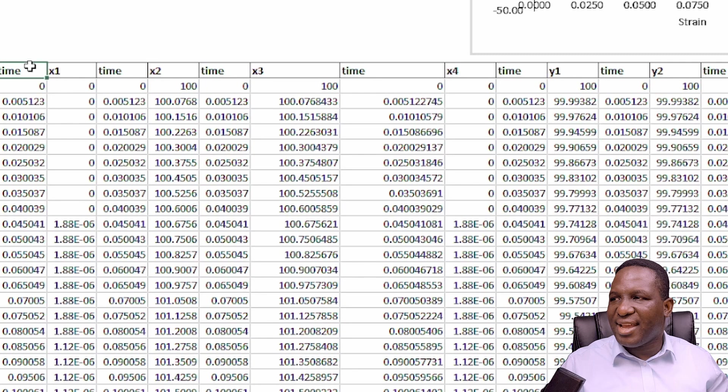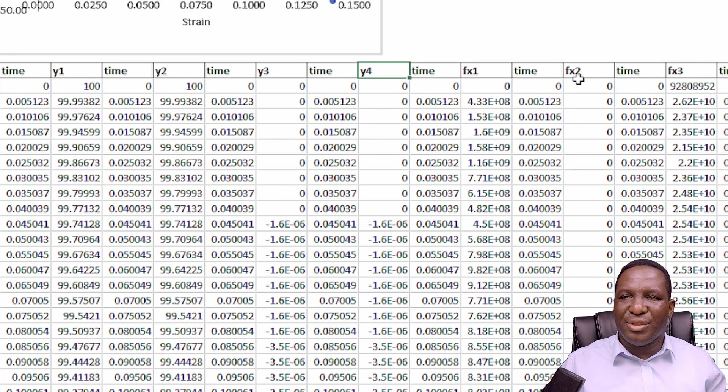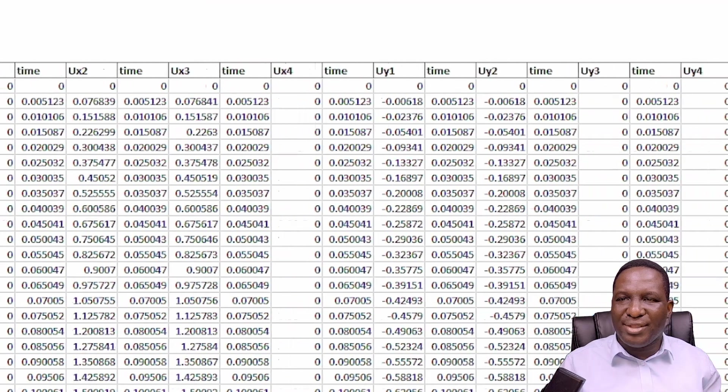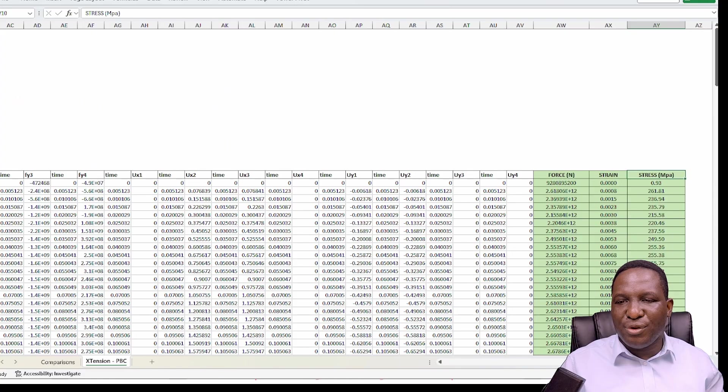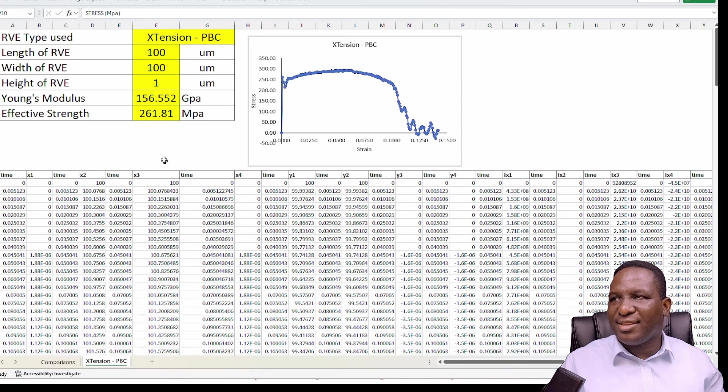This is the data that comes from that simulation. You'll see time, x1 time coordinate position, coordinate position for node 4, reaction force, the coordinate y position for all of them. Then you get the fx coordinate, the reaction force in x for all four nodes. When you get to the end, we can work out the force, the strain, and the stress.